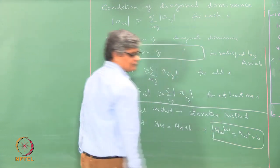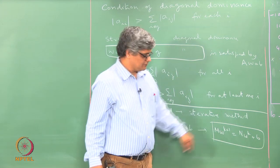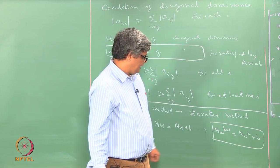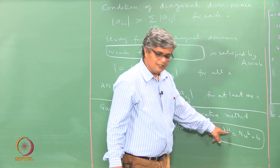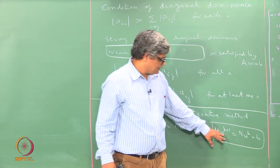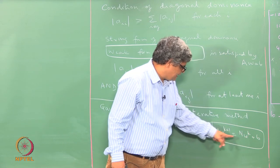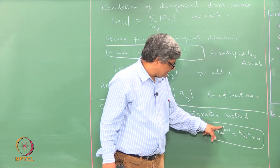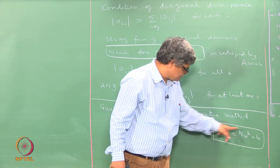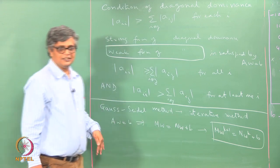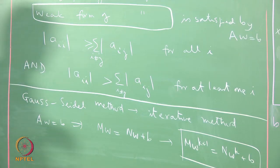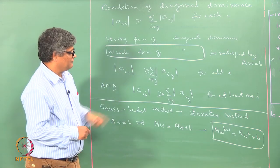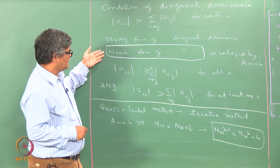We start with some initial guess — the k=0 values of all the w's. We substitute these to get the k+1 values, then put those back in to get k+2 values, and continue until we get a converged solution. We will get a converged solution if we have the weak form of diagonal dominance for the coefficient matrix A. The Gauss-Seidel method will converge no matter what the initial guess is, provided the coefficient matrix satisfies the weak form of diagonal dominance.